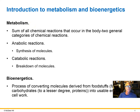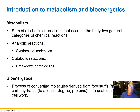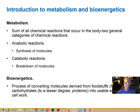Metabolism is the sum of all the chemical reactions that occur in a cell, summed over all the different cell types you have. We can classify all the reactions into two categories: anabolic reactions, in which we're synthesizing more complex molecules from simpler ones, and catabolic reactions, in which we're breaking down molecules into less complex ones.